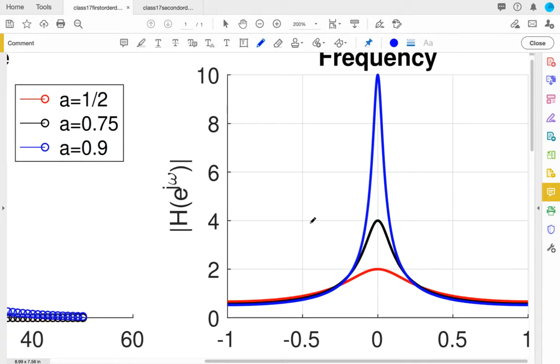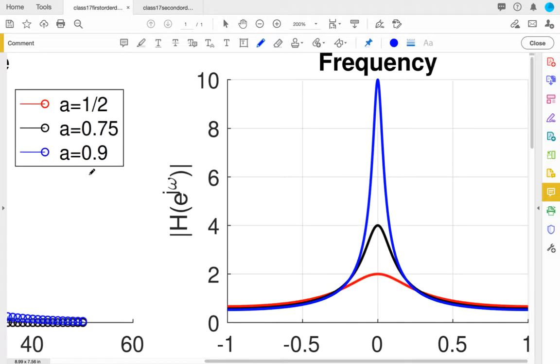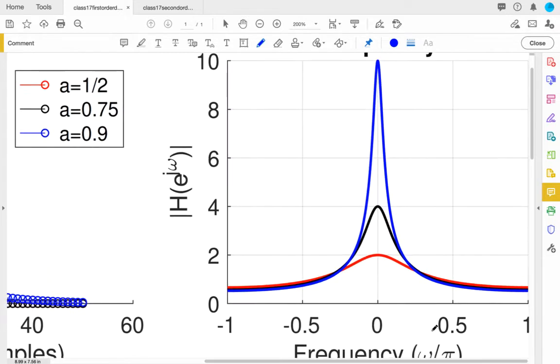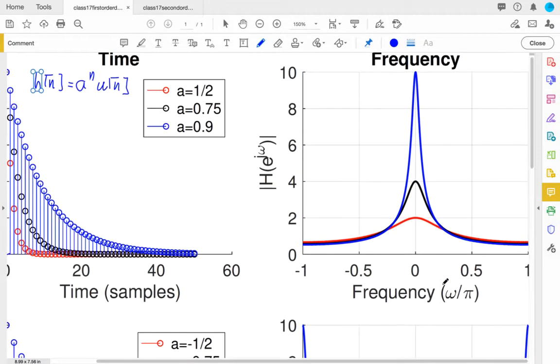I've now got the same three choices of A. And this is the frequency axis going from minus pi to pi. It's normalized by pi. I'm going to make this just a little bit smaller. And we can see this behavior that the smaller A is, the smaller values of A have a much broader filter here. It's lower gain, but it's a broader filter.